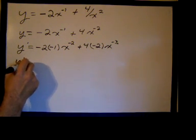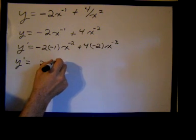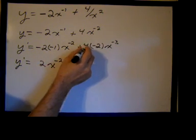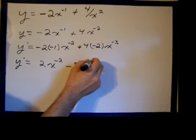We have y prime equals negative 2 times negative 1 is 2, x to the negative 2, then negative 4 times negative 2 is minus 8, x to the negative 3.